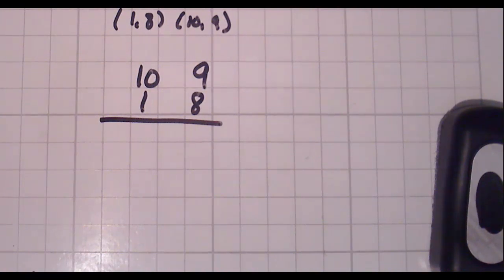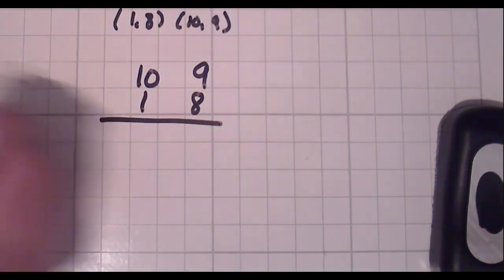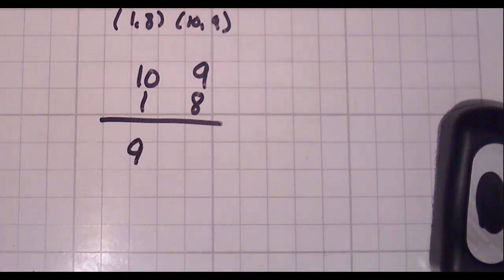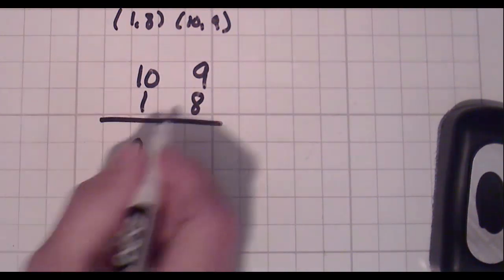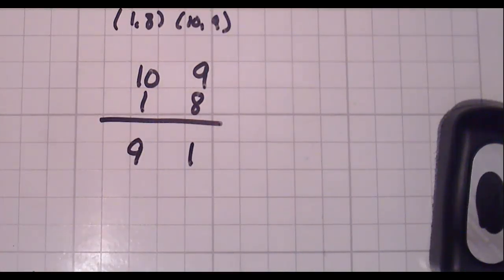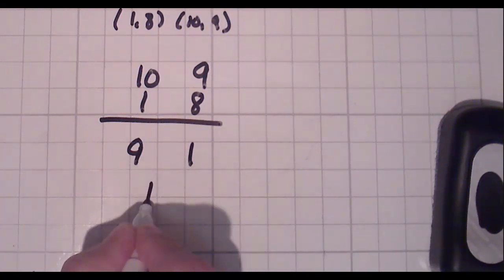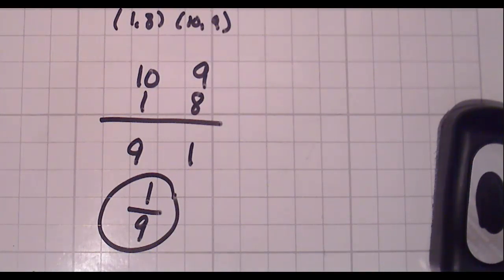Now the next step is really important. You take the top number and you subtract the bottom number. So 10 minus 1 gives us 9. Do the same thing for the second one. 9 minus 8 is 1. You following me so far? Good. Now we're going to take the second number and put it over the first number, and that's the slope of your line. It doesn't get any harder than that.